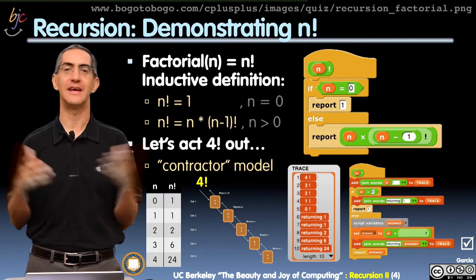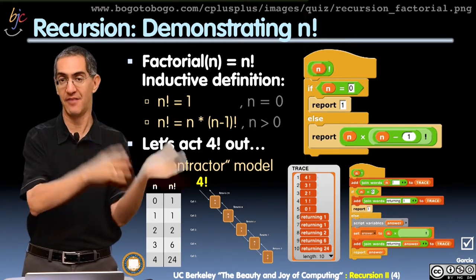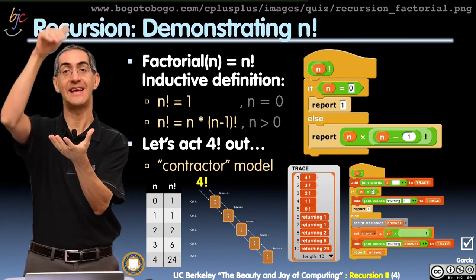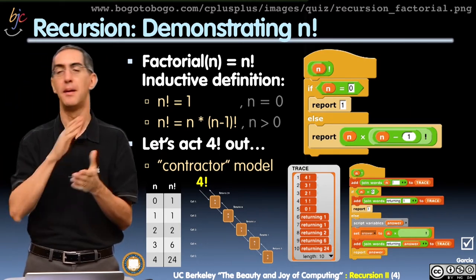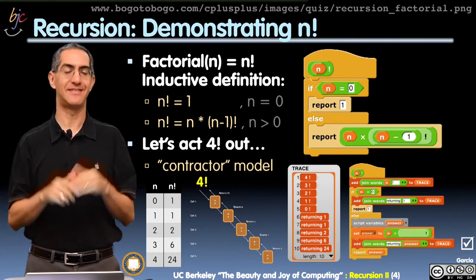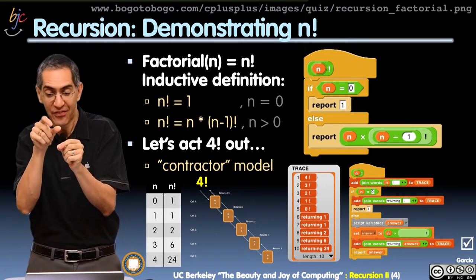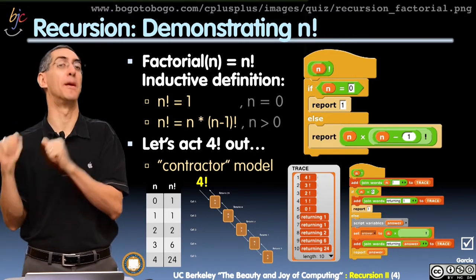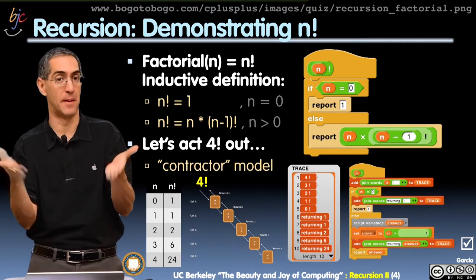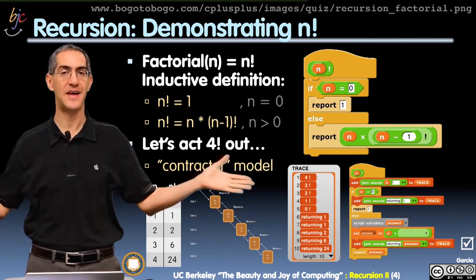So factorial is a mathematical relationship. It's a function that takes in a single non-negative integer, so 0, 1, 2, 3. The output is that number times itself one less, times itself one less, until you get to 1. So if I ask for 4, 4 factorial is 4 times 3 times 2 times 1. And I believe that's 24. So that's what factorial is.